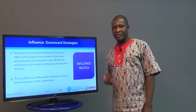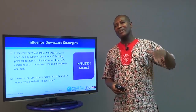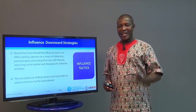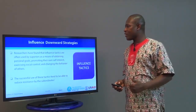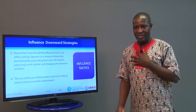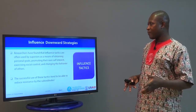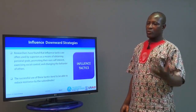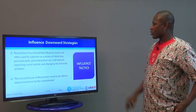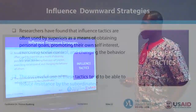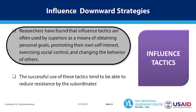What do we mean by downward influencing tactics or strategies? It means that it is the leaders, the people at the top, who want those below to do things for them. The behavior being altered is the behavior of the subordinates. You want your subordinates to do certain things and you are using the strategy to influence them. In most cases, superiors tend to influence those below more than those below try to influence those at the top.